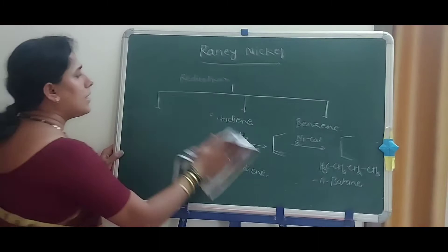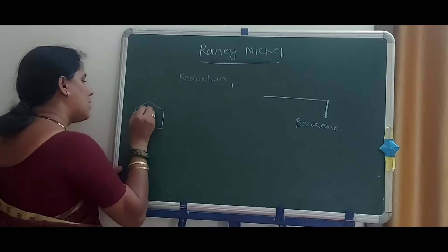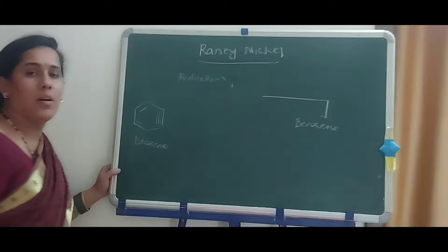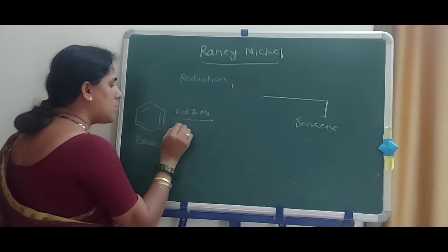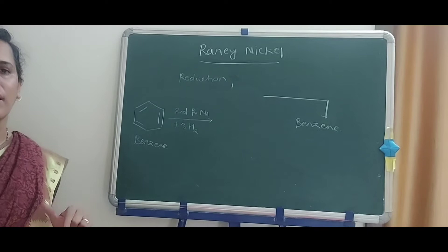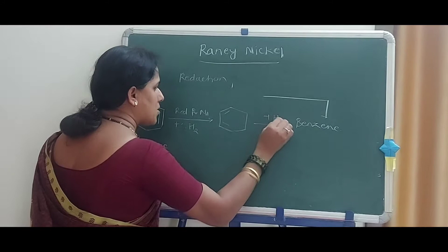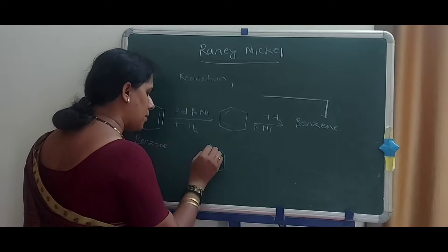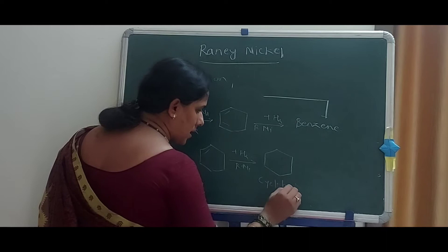The next example is benzene. Benzene has 3 double bonds. Using Raney Nickel as catalyst, 3 H2 molecules are added step by step. First H2 gives an intermediate, second H2 gives another intermediate, and third H2 with Raney Nickel gives cyclohexane. So benzene is converted into cyclohexane.